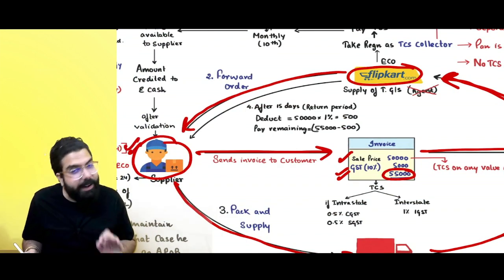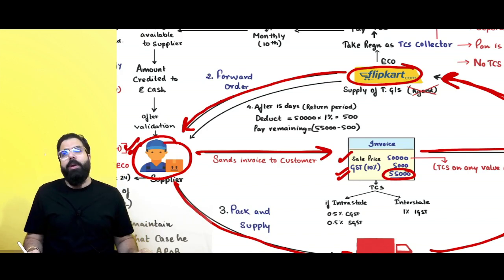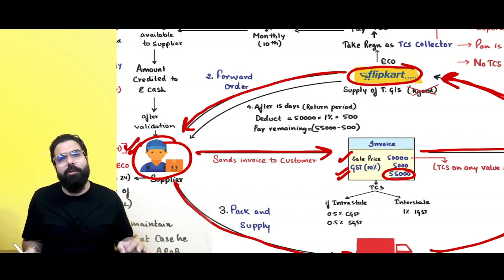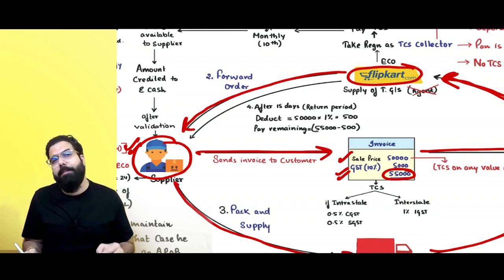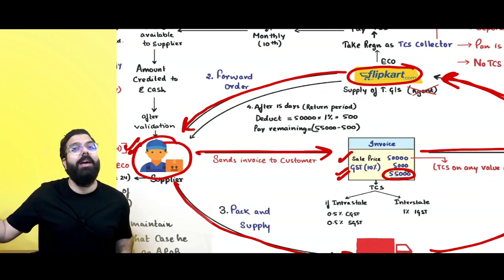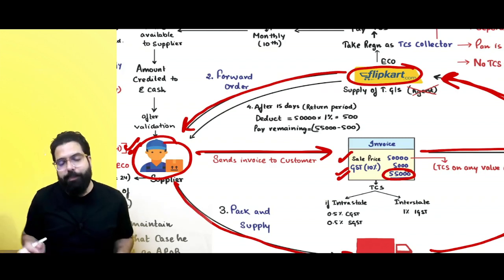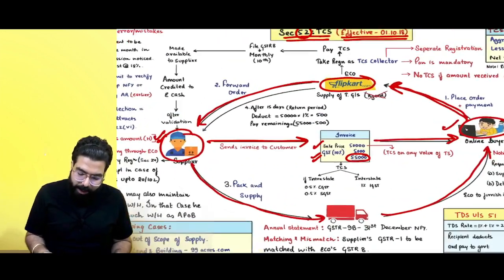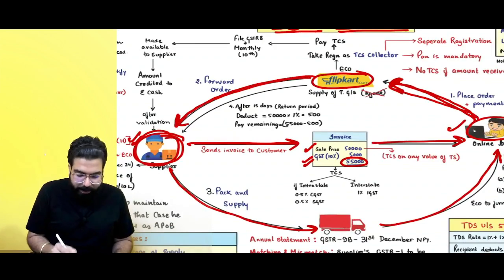Flipkart being the e-commerce operator — the government was seeing that suppliers were not being traceable. Hence the government told Flipkart: whenever a supplier wants to supply goods through you, whenever he is supplying through you, go ahead and deduct TCS and give it to the government so that the government can know who these suppliers are, sitting somewhere in a corner and supplying goods — the government wants to trace them.